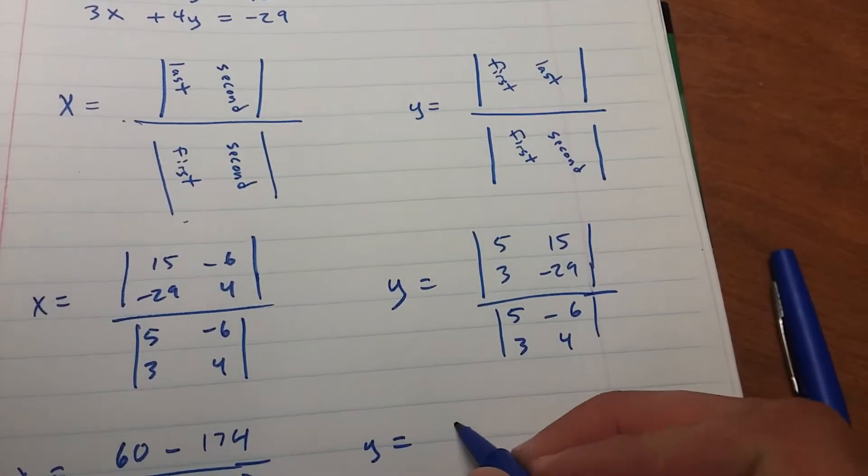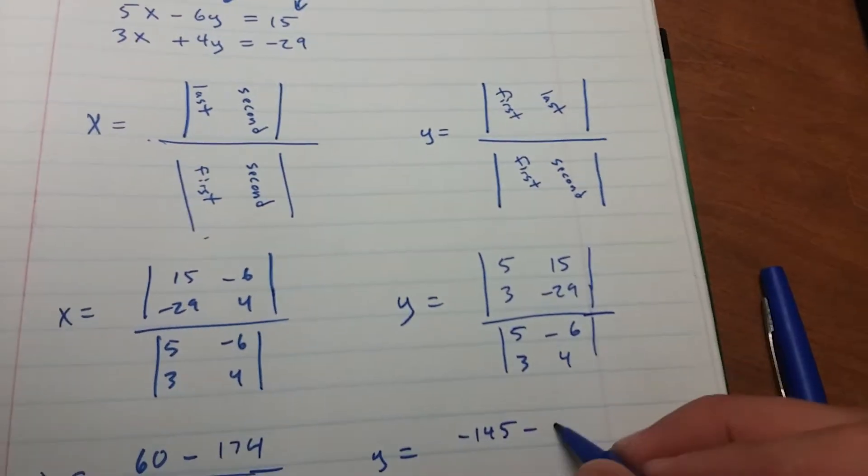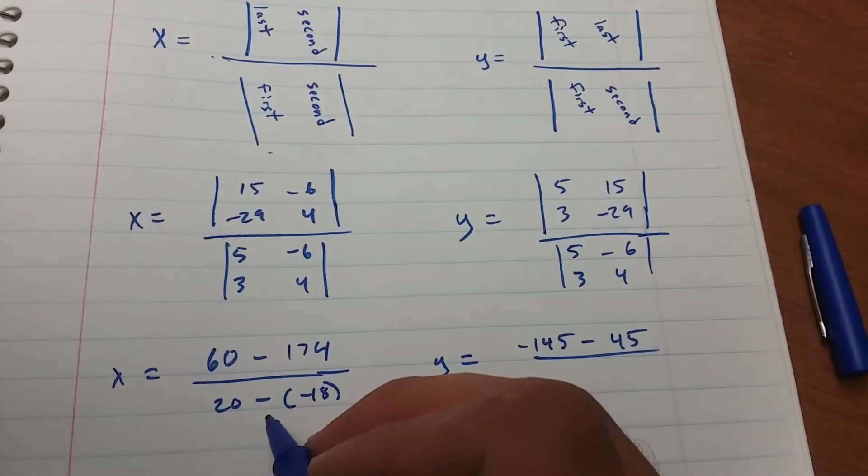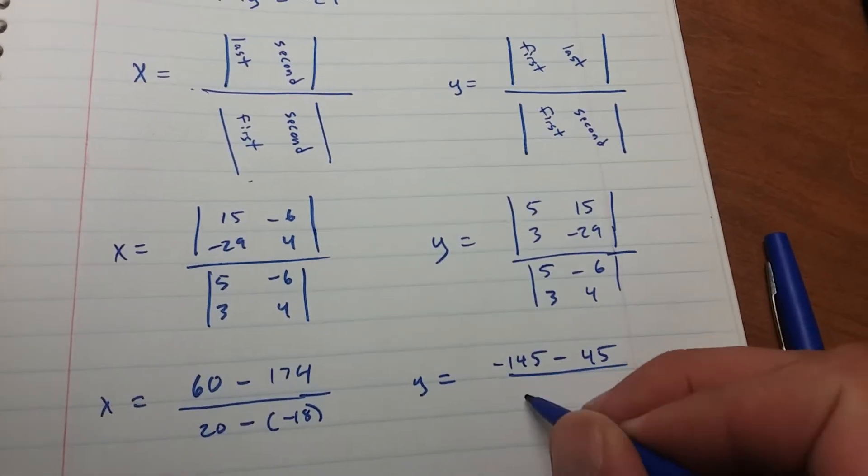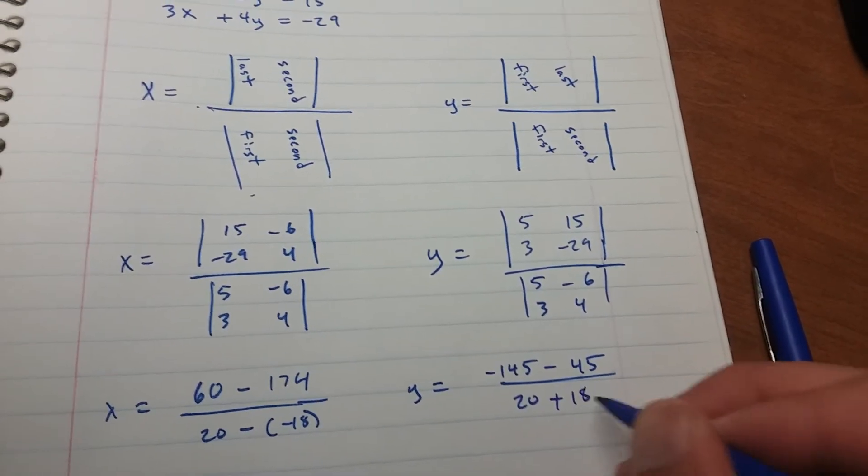5 times negative 29, negative 145, minus 45, all over the same thing. This is the same as this, 5 times 4 is 20, minus negative 18, plus 18, same thing.